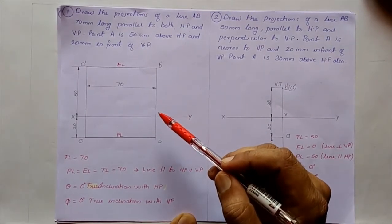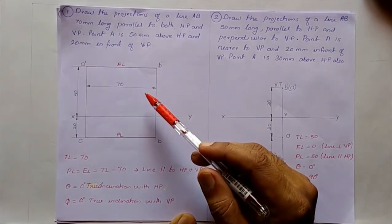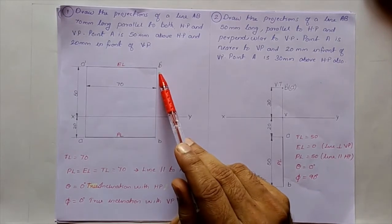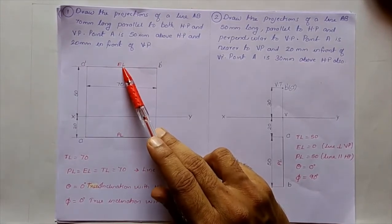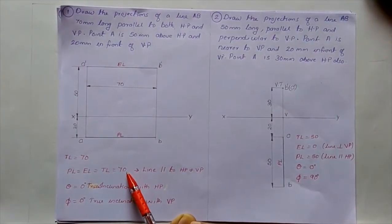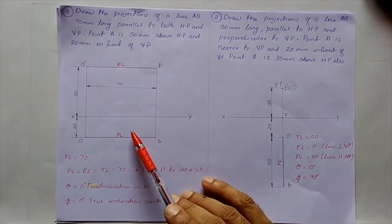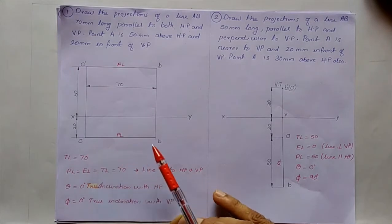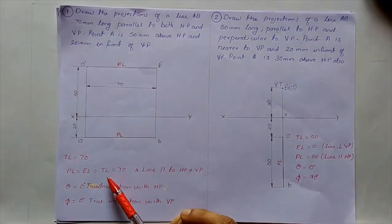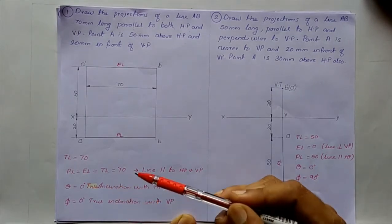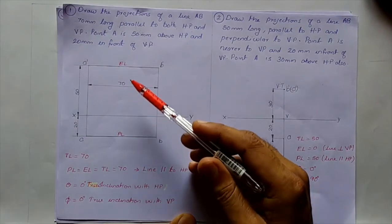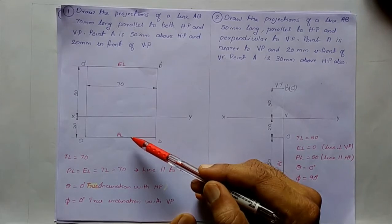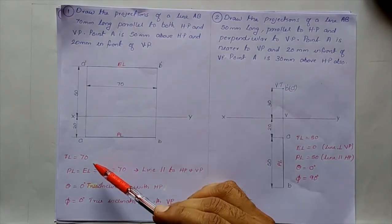Since line AB is parallel to both planes, the front view (elevation), a'b', will have the same length as the true length, because the line is parallel to VP. Similarly, the top view (plan), AB, will also equal the true length, because the line is parallel to HP. So both the elevation length and plan length are equal to the true length — 70 mm. That is the summary of the first question.